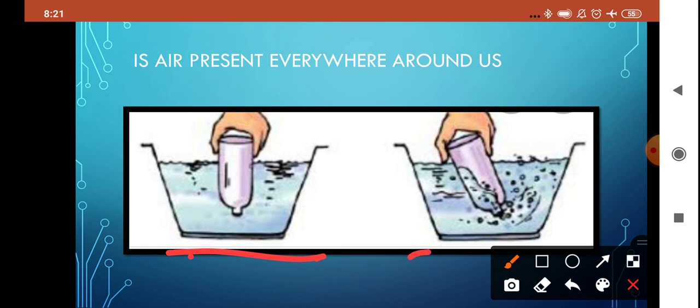Now, what we will do, we will just slightly tilt the bottle. As you tilt the bottle, you will just see some bubbles, tiny bubbles appearing out from it. And then the water is entering into the bottle. Now, what does it signify? It signifies that the bottle which we were thinking is empty was not empty. It was filled with air.